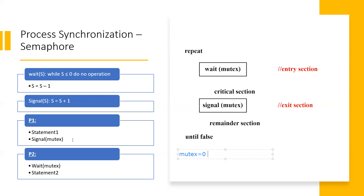This is process one. The statement is going to run. Critical section is occupied. So the signal function will produce one. If one is going to be one, then it will play P2. Wait and the mutex: when the critical section is occupied, the weight function waits while the critical section is in use. The semaphore variable's value must be 1 for the critical section to be available. So P2 can't execute before P1 because the mutual exclusion value was 0.